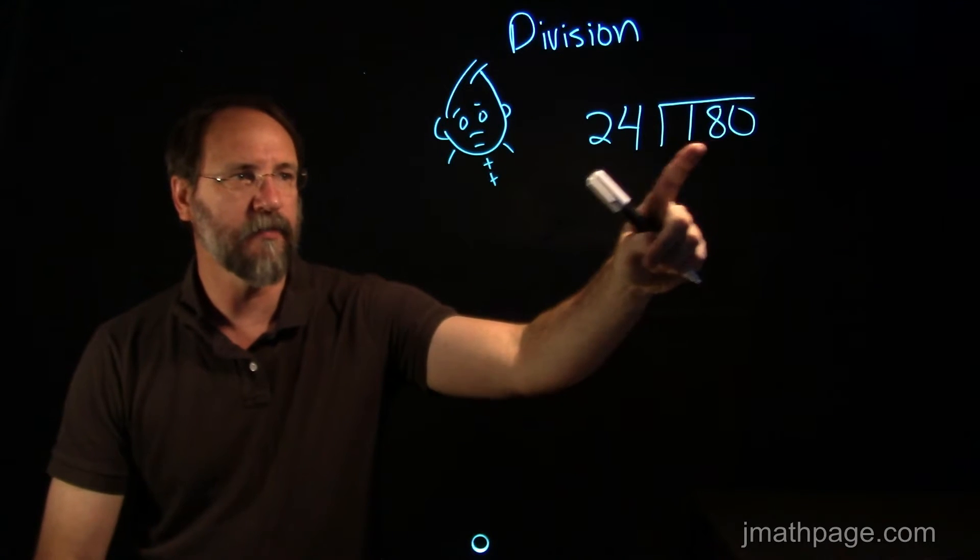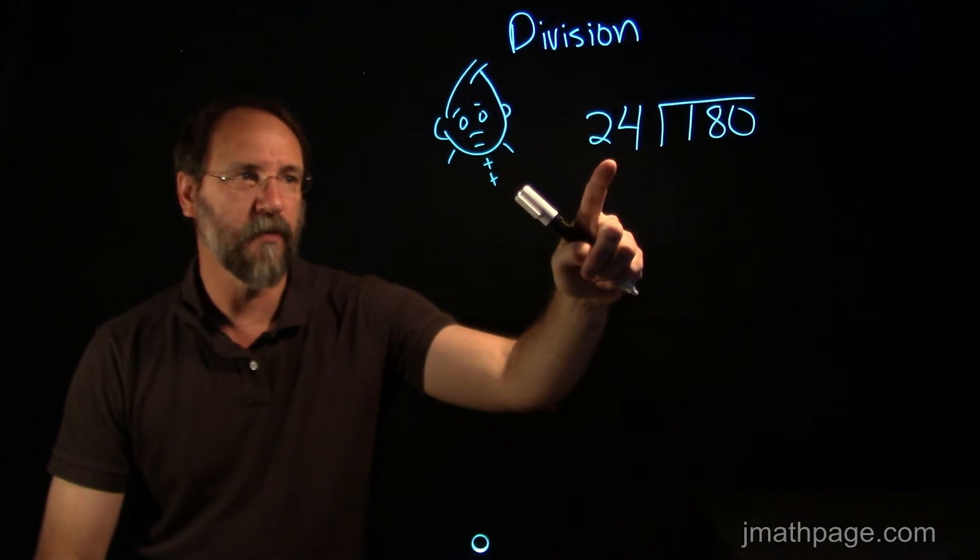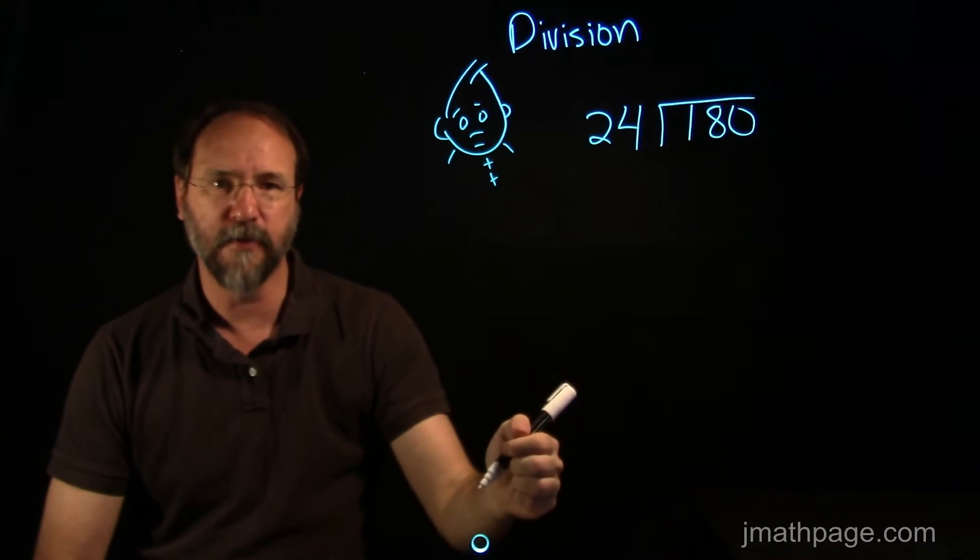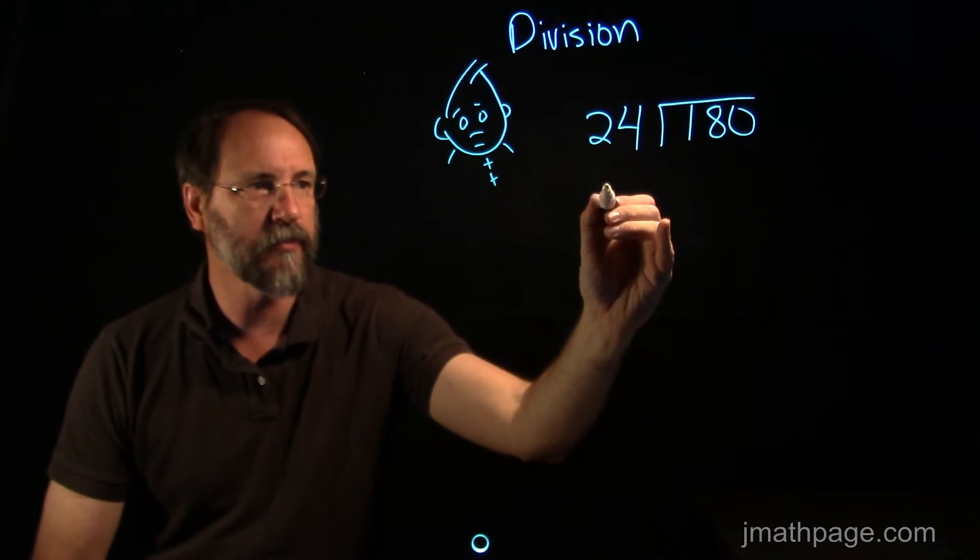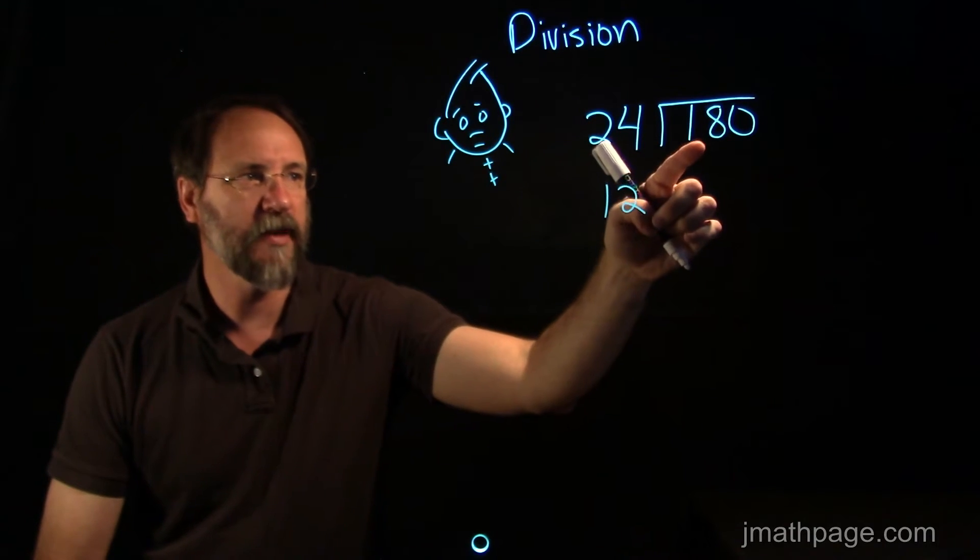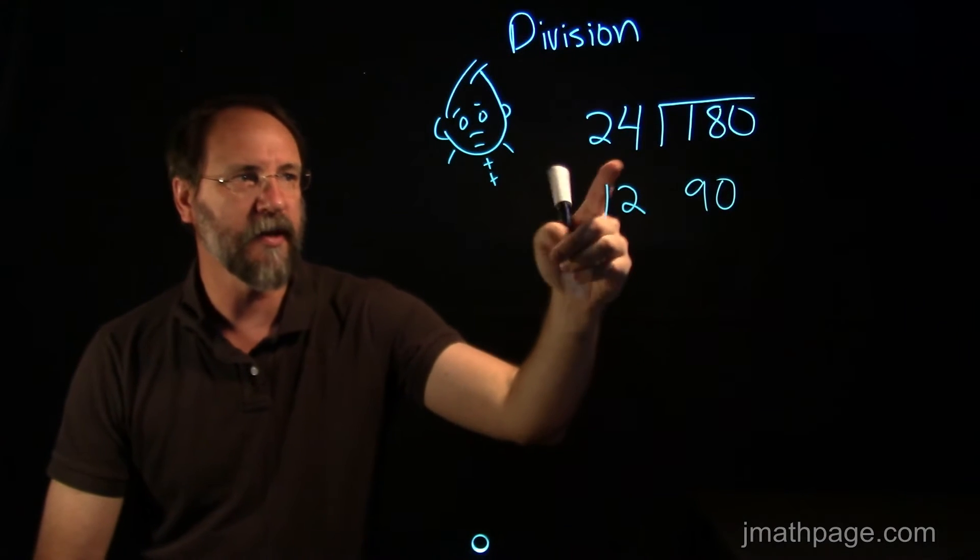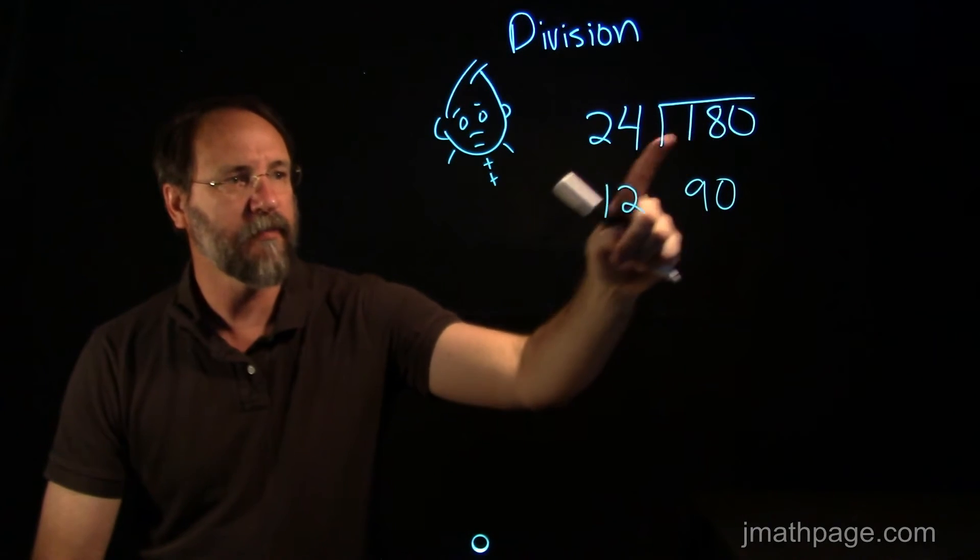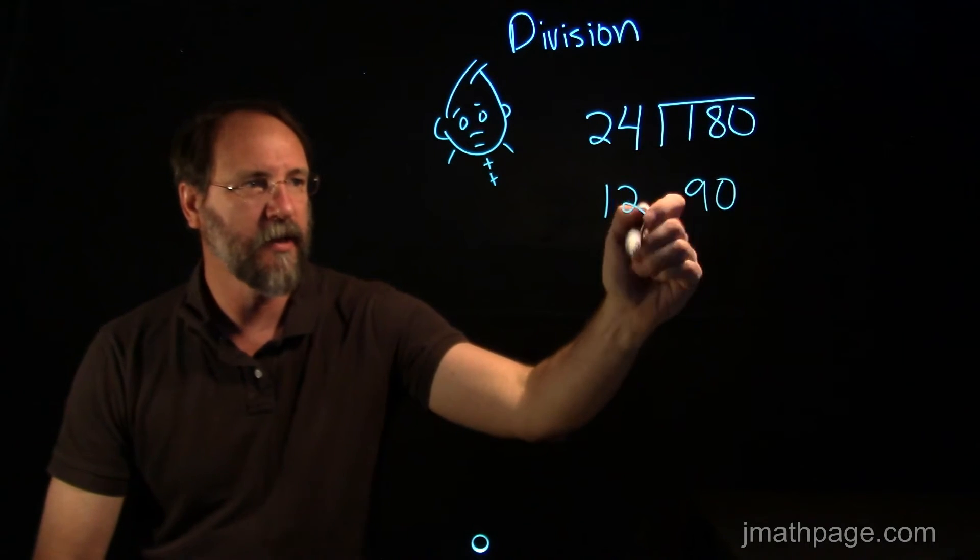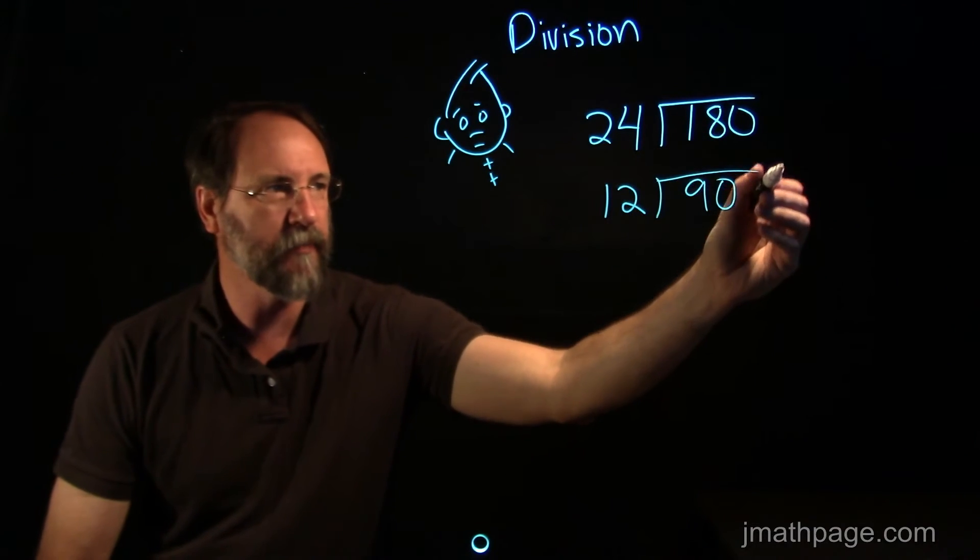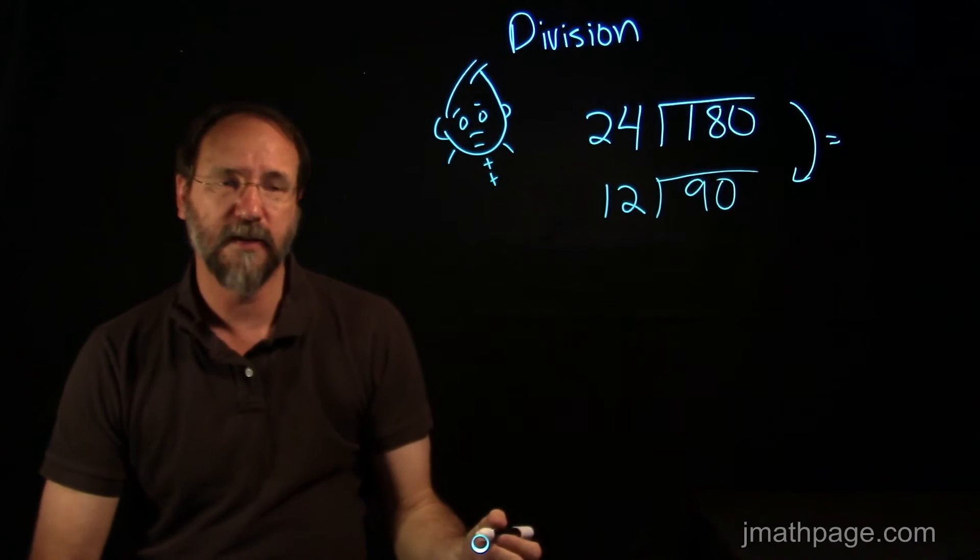One thing I notice about 24 and 180 is that they're both even numbers. So 24 and 180 can be halved. If I take the number 24 and I halve it, it becomes 12. If I take the number 180 and I halve it, it becomes 90. And what I'm thinking is that when you halve the 24 and you halve the 180, this should make the same problem. I'm thinking that these two problems should be the same. Let's see if it works out.